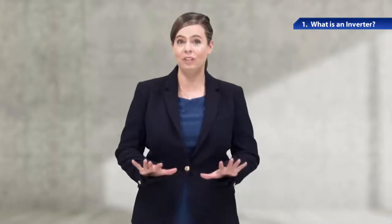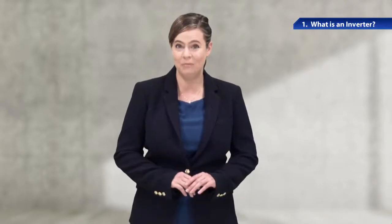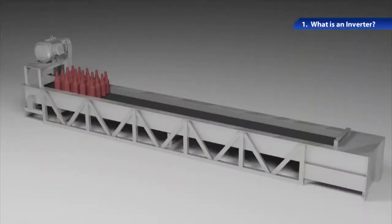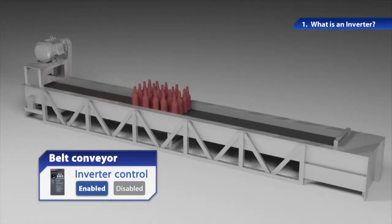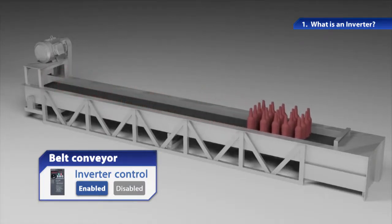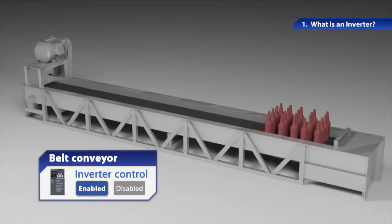Let's take a look at a belt conveyor as an example. This is a belt conveyor controlled by an inverter. You can see this kind of belt conveyor in factories. When the motor is switched on, it starts running slowly to carry the work. The work stays standing and does not fall over or drop from the belt.